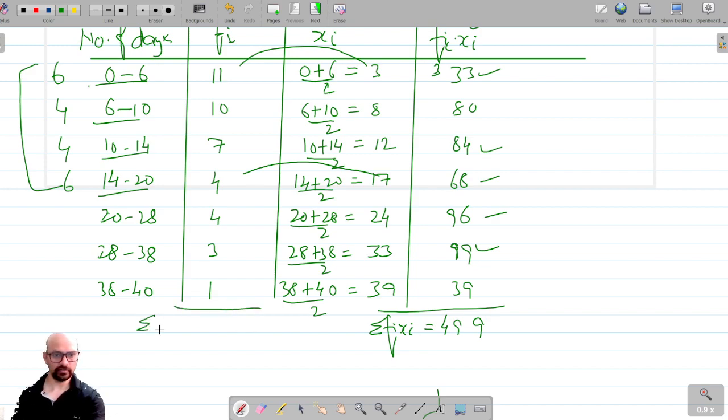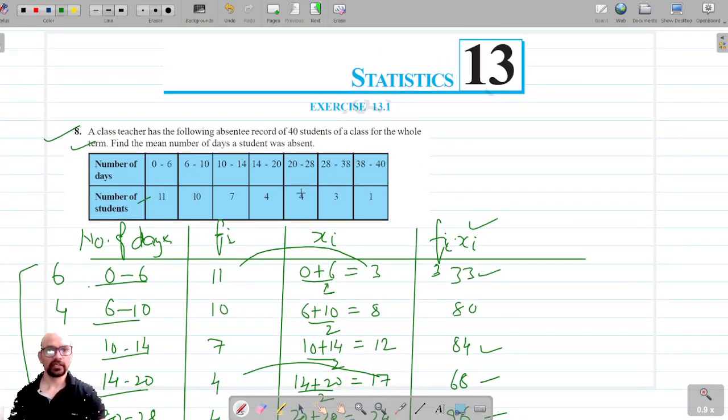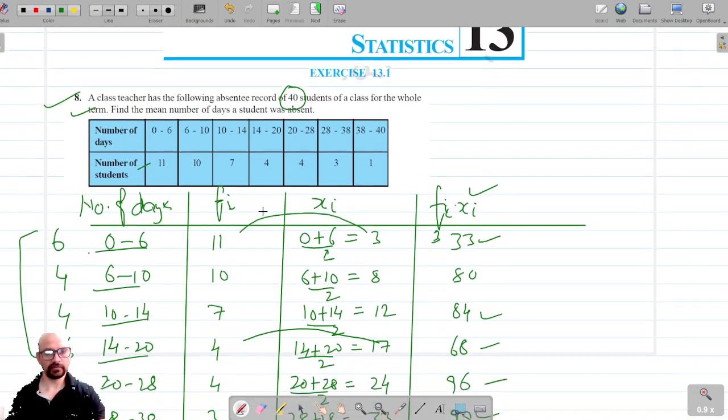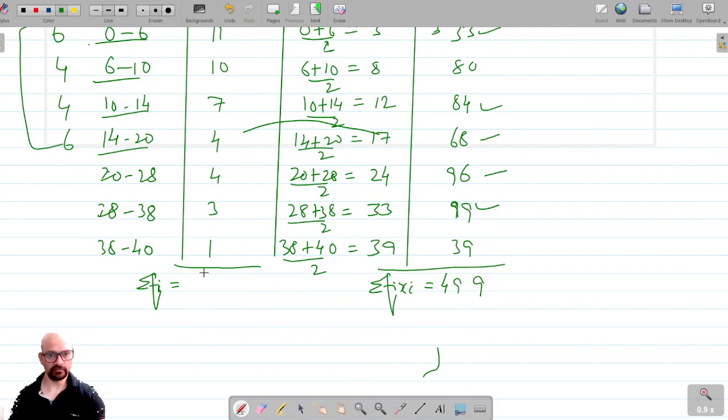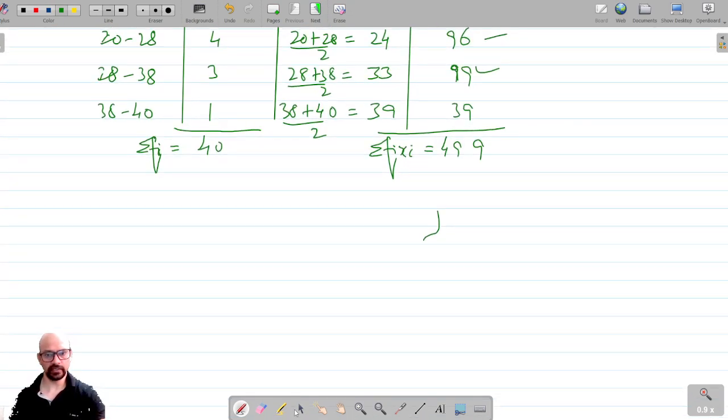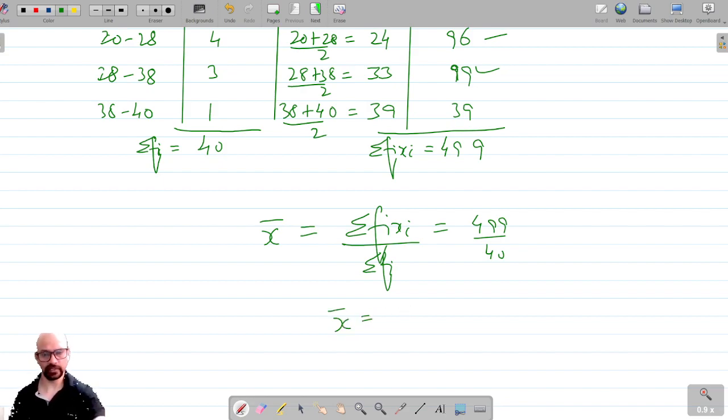The summation of the frequency is given as the absentee record of 40 students, so this should be equal to 40. Now we're going to find the mean using the direct method. The formula is sigma fi into xi by sigma fi, which is 499 divided by 40.